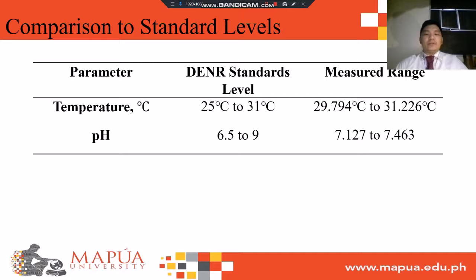For comparison to standard levels, the DENR has a standard level for temperature ranging from 25°C to 31°C, while the measured range is from 29.794°C to 31.226°C. For the standard levels for pH level, it ranges from 6.5 to 9, while the measured range is from 7.127 to 7.463.